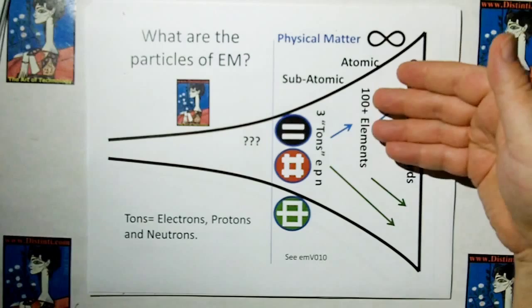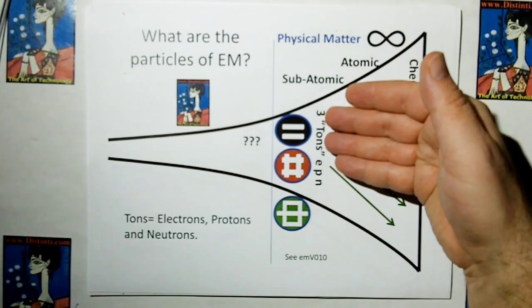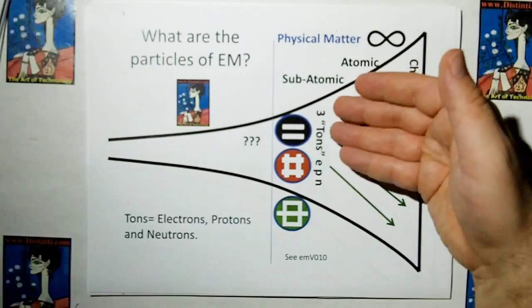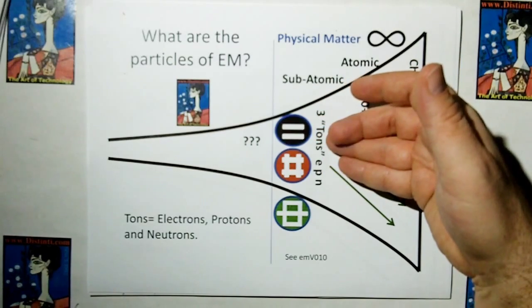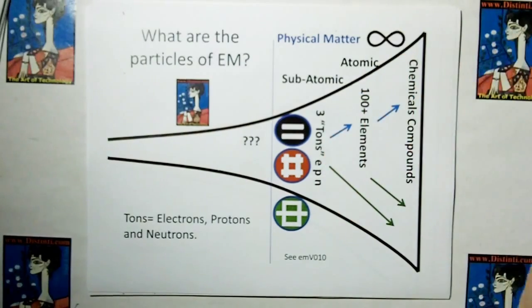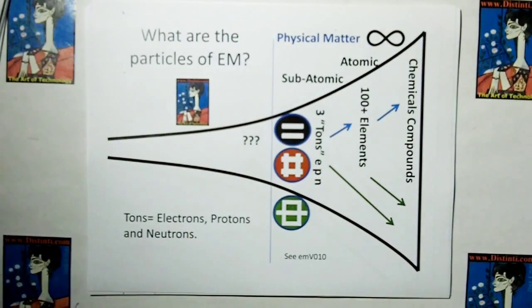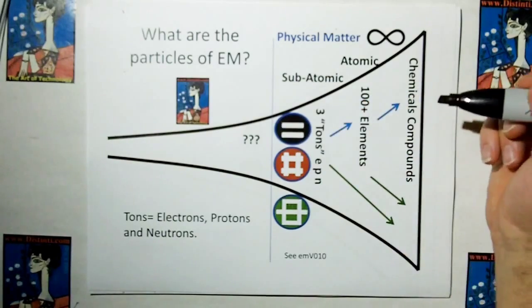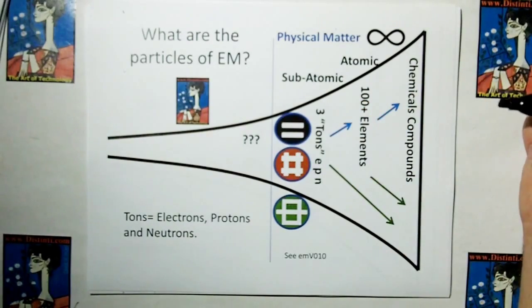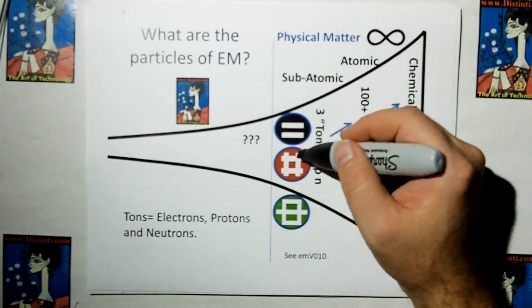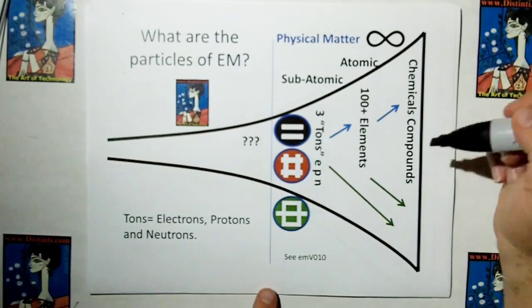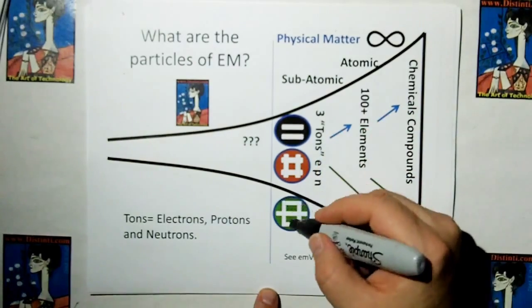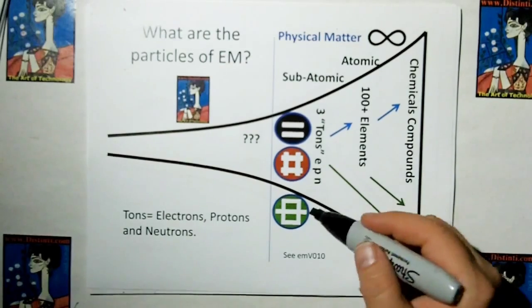Now, these 100 or plus elements are synthesized by three subatomic particles. I call the electron, the proton, and the neutron. Those are my symbols for them. And I call them tons for short. Electron, proton, and neutron. There's three of them. And the reason why they have these symbols is because an electron is at least two negative particles. A proton is at least two positive particles, maybe more. And a neutron is even numbers of positive and negative charges. And green means it's neutral.